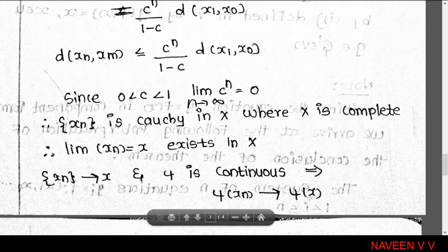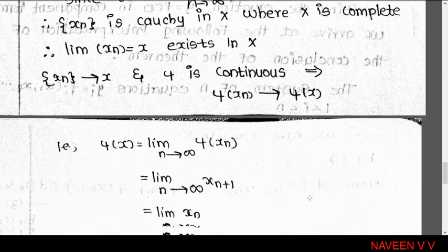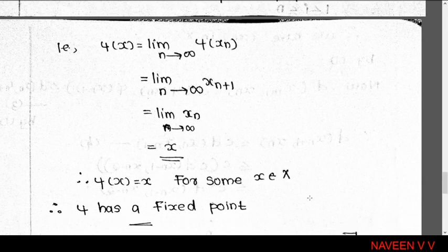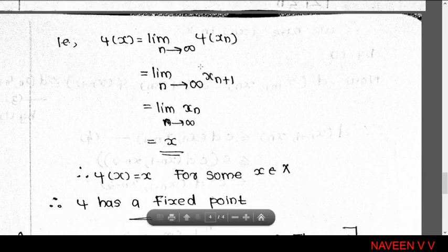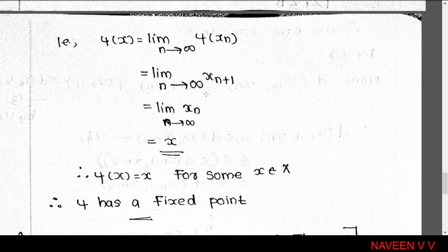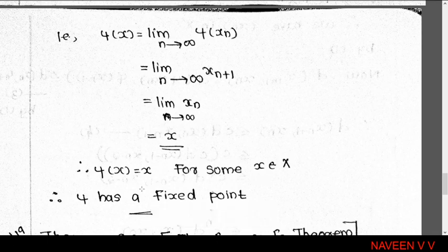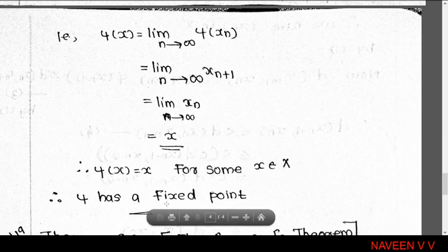Since φ is continuous, φ(x) = limit as n→∞ of φ(x_n). And φ(x_n) = x_{n+1}, so the limit as n→∞ of φ(x_n) = limit as n→∞ of x_{n+1} = x. Therefore φ(x) = x, so x is a fixed point. Since x belongs to the space X, φ has at least one fixed point. Combined with uniqueness already proved, the fixed point is unique. Proof complete.